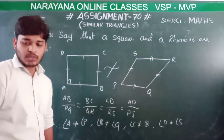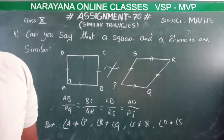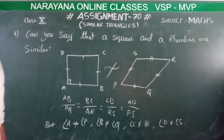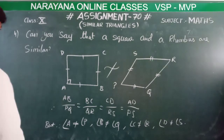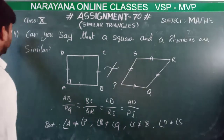So, square and rhombus are not similar. Their sides are in proportion, but their corresponding angles are not equal. Now moving to the next one, the fifth question.